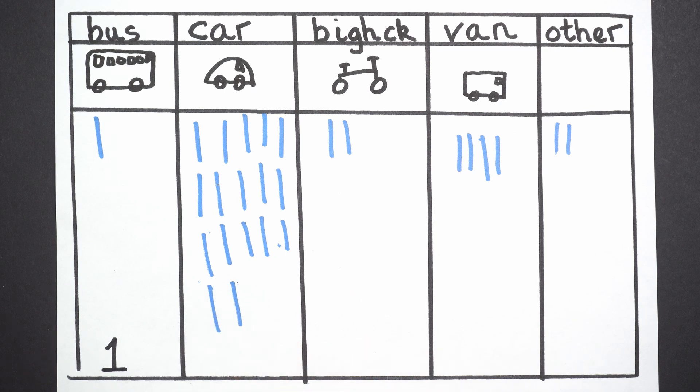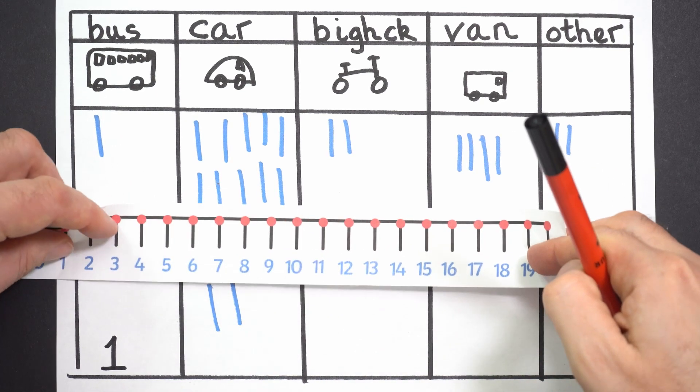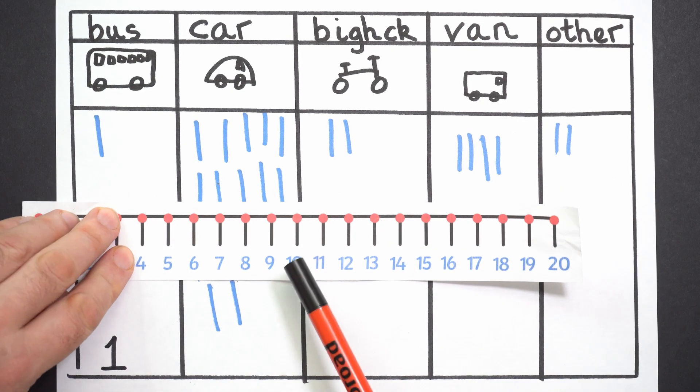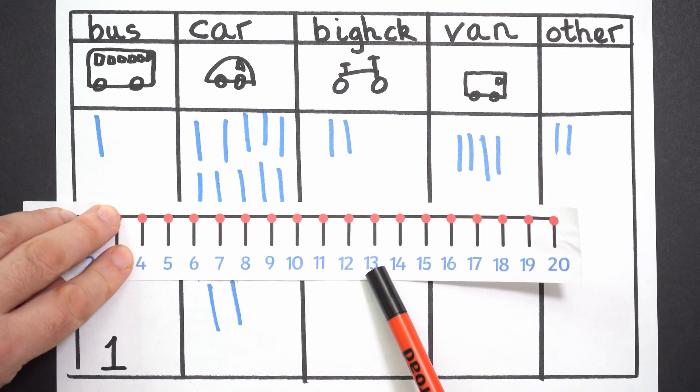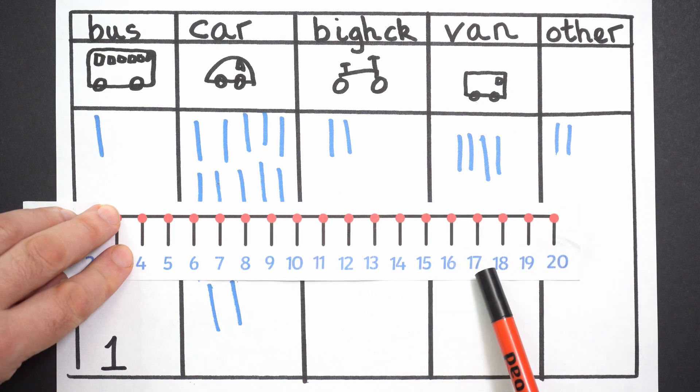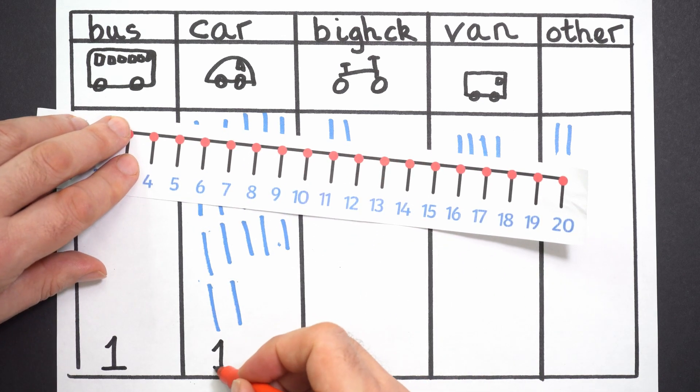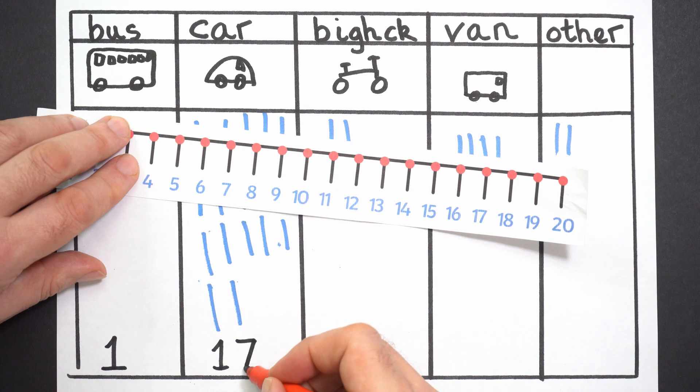If you're not sure how to write seventeen, use your number line. I'm going to get mine. Seventeen. Now remember, ten, eleven, twelve, thirteen, fourteen, fifteen, sixteen, seventeen. I'm going to write that here. A one and a seven.